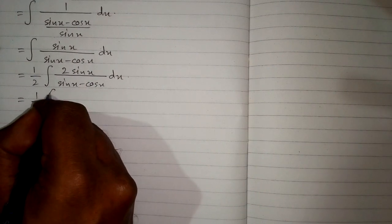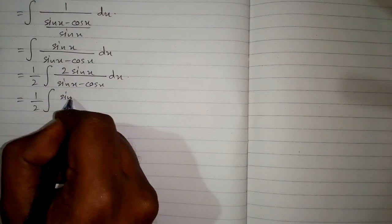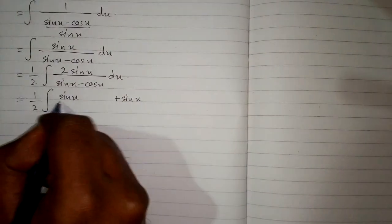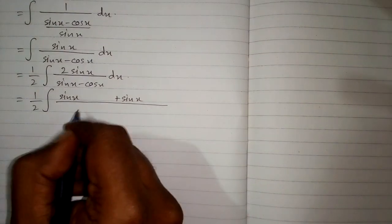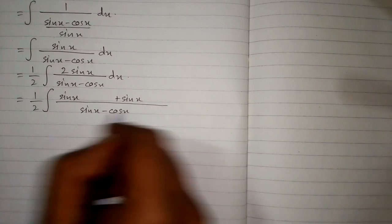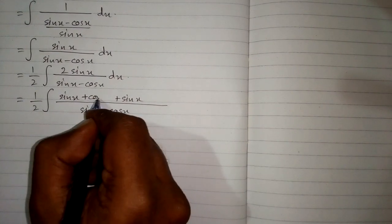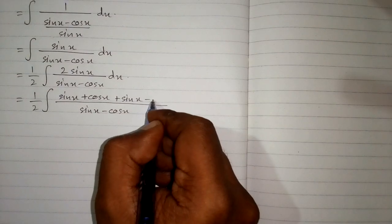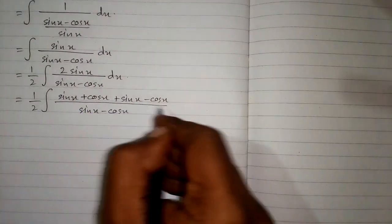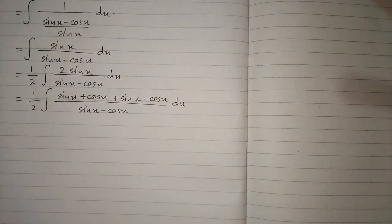Now 2 sin x can be written as sin x plus sin x. We will add and subtract cos x, because cos x minus cos x is 0, and sin x plus sin x is again 2 sin x. So 2 sin x becomes sin x plus cos x plus sin x minus cos x.